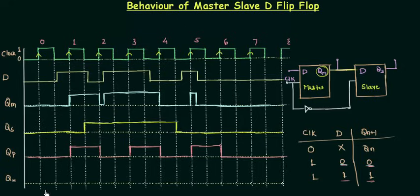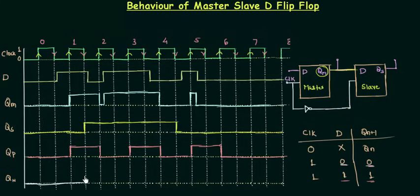Now the last waveform is for the negative edge triggered flip-flop, and it is very important. We will consider all the falling edges of the clock. For the first falling edge D is low, so the output remains low. For the next falling edge D is high, so it goes high. For the following falling edges D is high, so it remains high. Finally, for the next falling edge D is low, so it goes low, and remains low for the last falling edge.